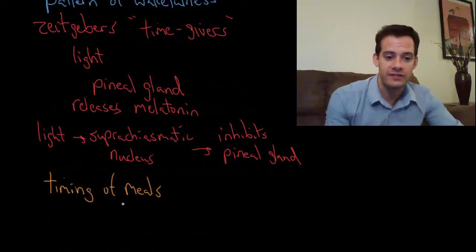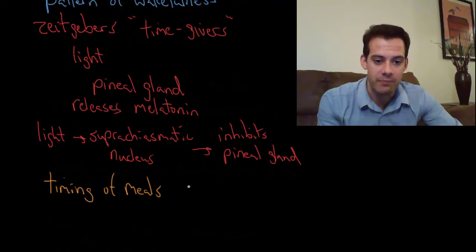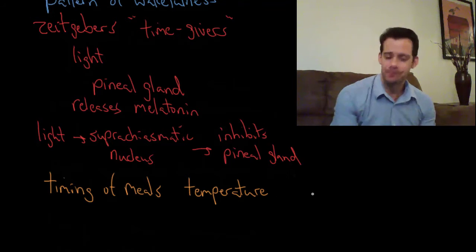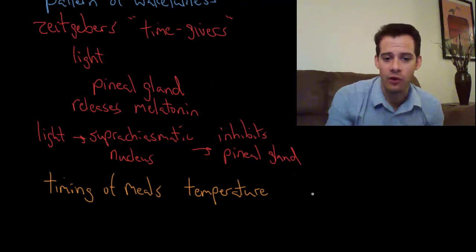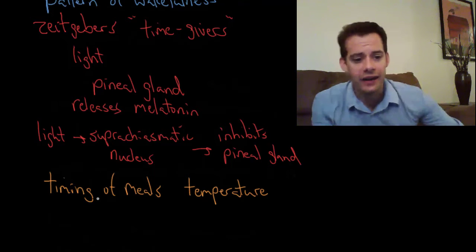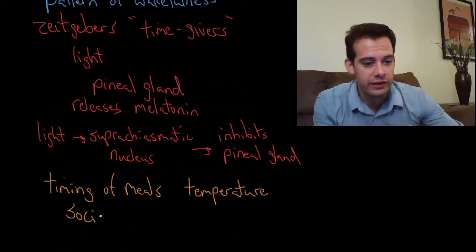And another thing that influences your circadian rhythm is temperature. And again this makes sense. Temperature fluctuates throughout the day and this is going to play a role in our body temperature fluctuating throughout the day. And that's going to influence our circadian rhythm.